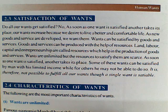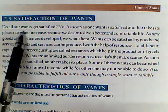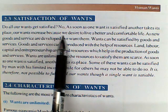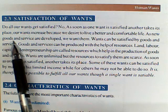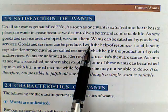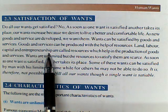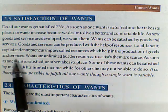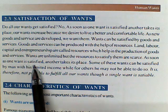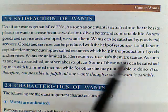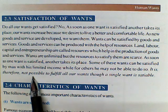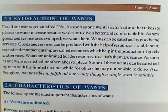Do all our wants get satisfied? No. As soon as one want is satisfied, another takes its place. Wants increase because we desire to live a better and comfortable life. As new goods and services are developed, we want them. Wants can be satisfied by goods and services, which can be produced with the help of resources. Land, labour, capital, and entrepreneurship are called resources, which help in the production of goods and services. Wants are unlimited but the resources to satisfy them are scarce.